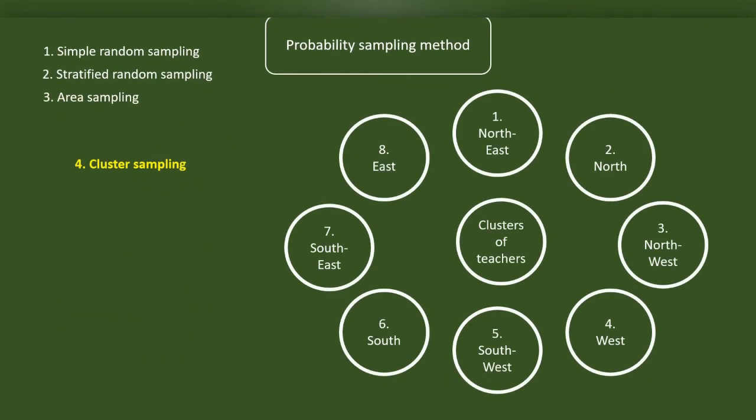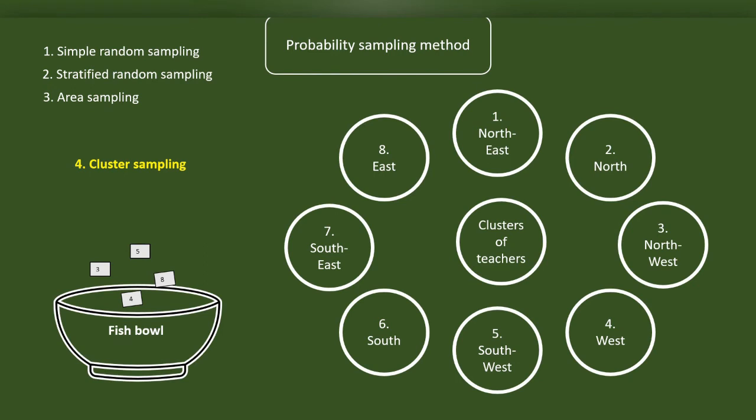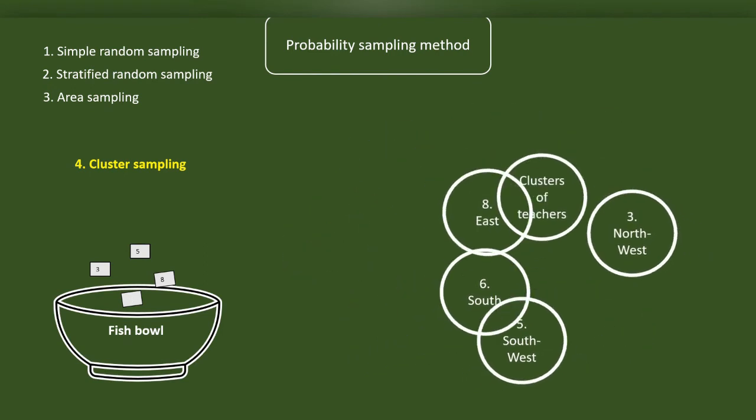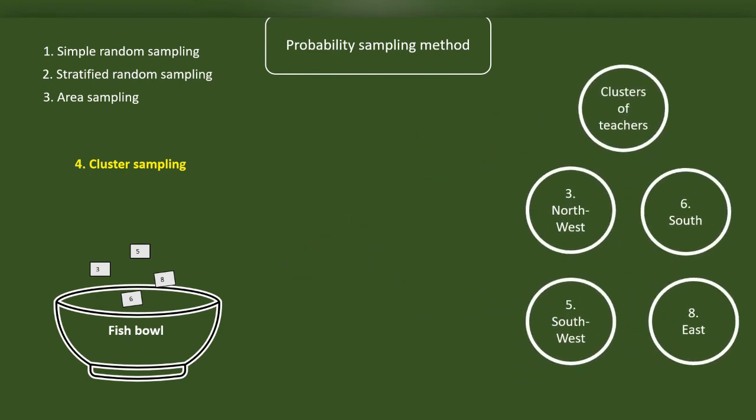In cluster sampling method, instead of area, we are choosing clusters. Imagine that we have to conduct research among teachers from an educational district. The teachers in the education district are members of different clusters. Using a random sampling method, we can choose 4 of these clusters and then collect data from all the teachers in these clusters.